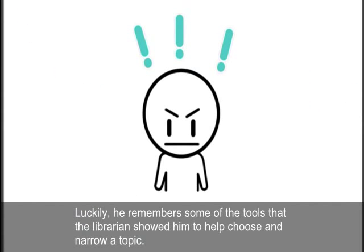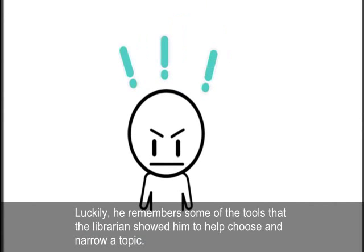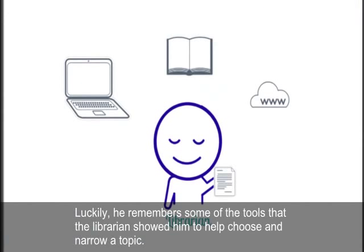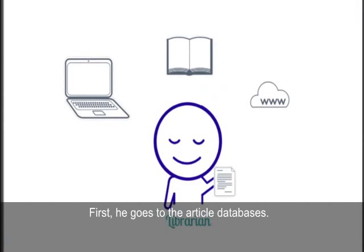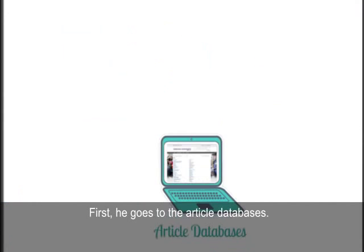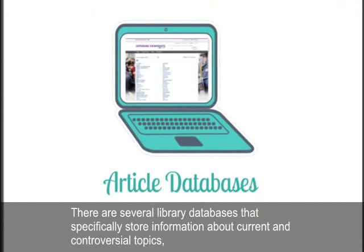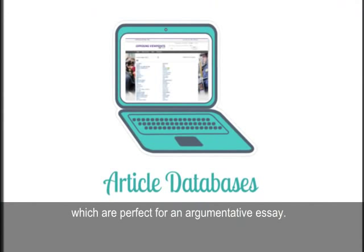Luckily, he remembers some of the tools that the librarians showed him to help choose and narrow a topic. First, he goes to the article databases. There are several library databases that specifically store information about current and controversial topics, which are perfect for an argumentative essay. This database is called Opposing Viewpoints.